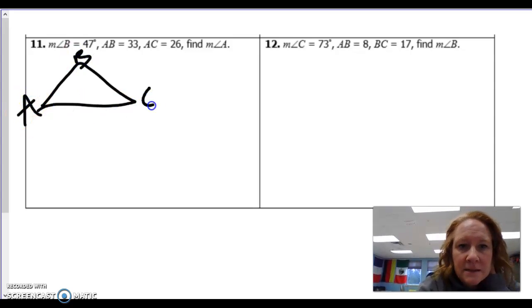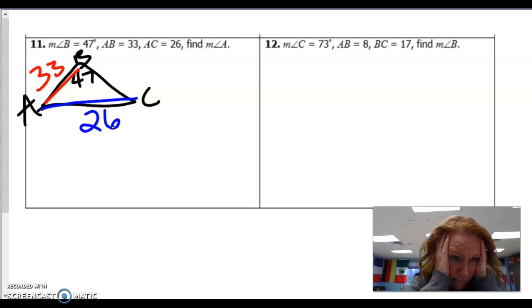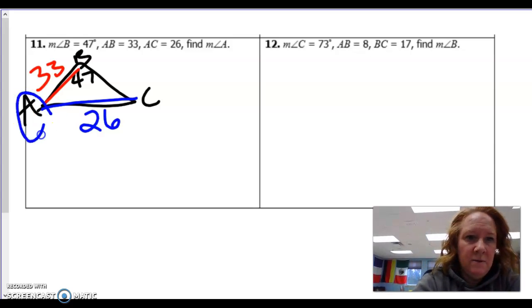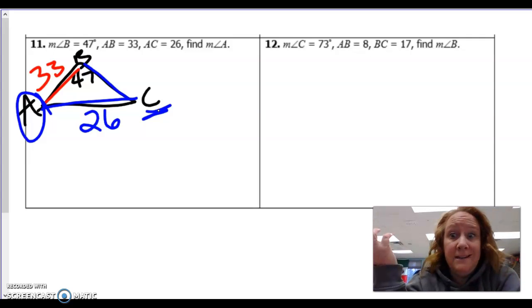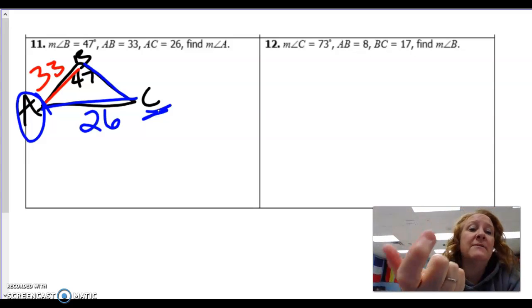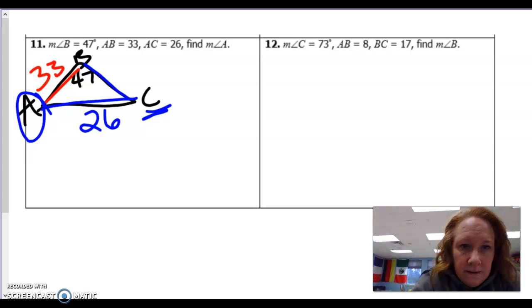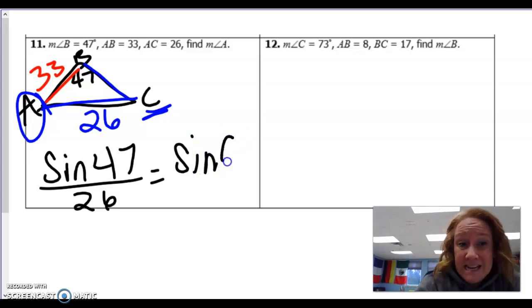So triangle ABC. B is 47. Then AB over here is 33. AC is 26. And then they want to find measure of angle A. Can I do that? I want to find this one, but I don't know how long this is. But if I found what C is, then I've got 180 degrees so I could find it. So let's find C. And after we find C, we can go back and find A.